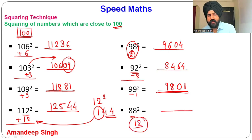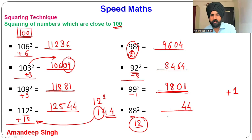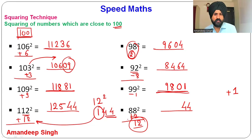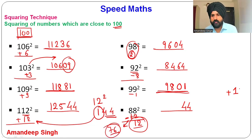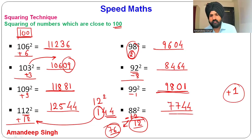For 88²: it is 12 less than 100. 12² = 144 — write 44, carry 1. Subtract: 88 − 12 = 76, plus carry 1 = 77. So 88² = 7744.